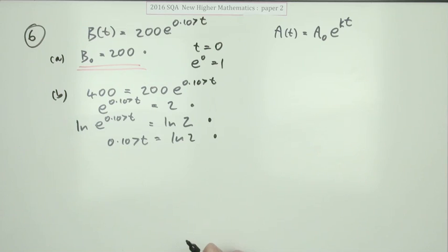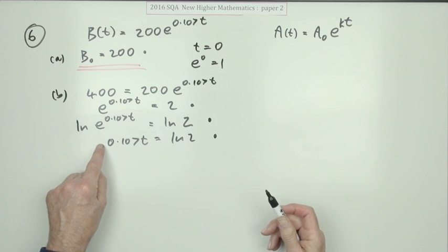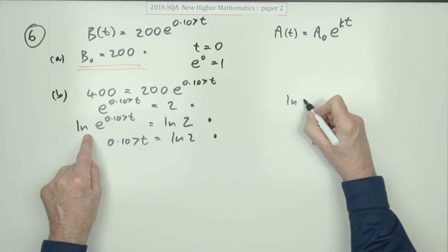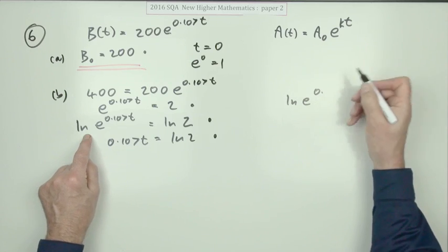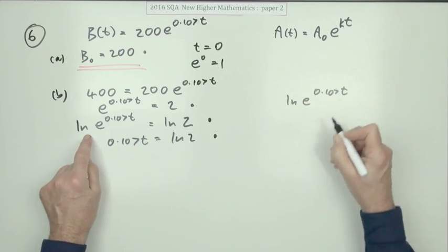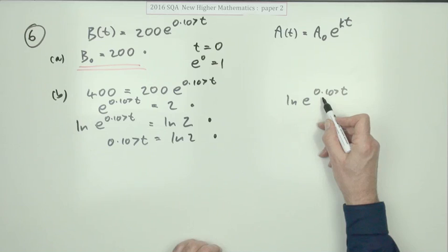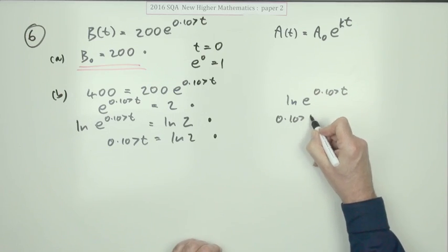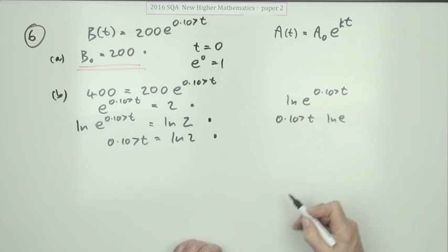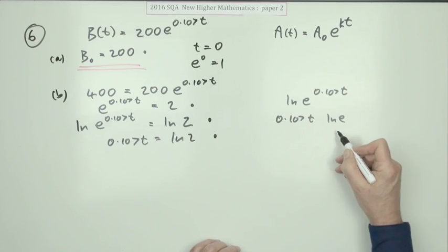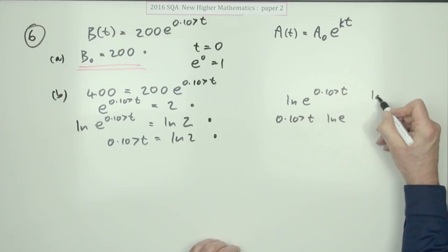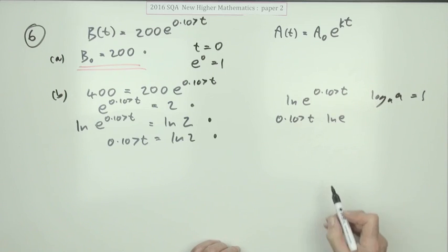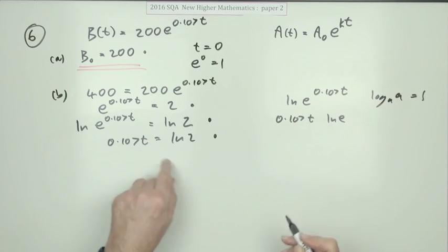So, going from that line to the next line uses the laws of logs: Ln of e to the power of 0.107T allows you to bring the power to the front — one of the laws of logarithms — giving 0.107T times Ln e. And since in any base, log base a of a equals one, Ln e equals one, so you're left with 0.107T equals Ln 2.